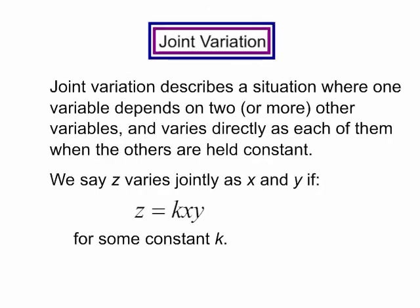So once again, for joint variation, we say z varies jointly as x and y if z is equal to some number, a constant k times x times y.